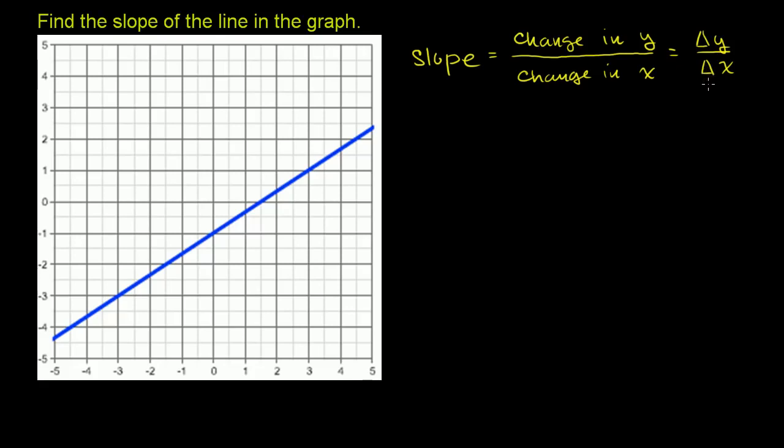So let's see what this change in y is for any change in x. So let's start at some point that seems pretty reasonable to read from this graph. Let's say we start at that point right there. And we want to go to another point that's pretty straightforward to read. We can literally pick any two points on this line. I'm just picking ones that are at nice integer coordinates so it's easy to read.